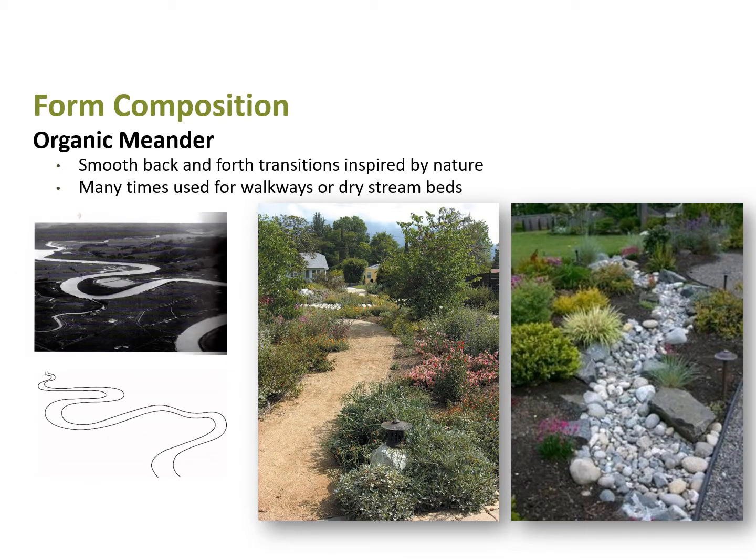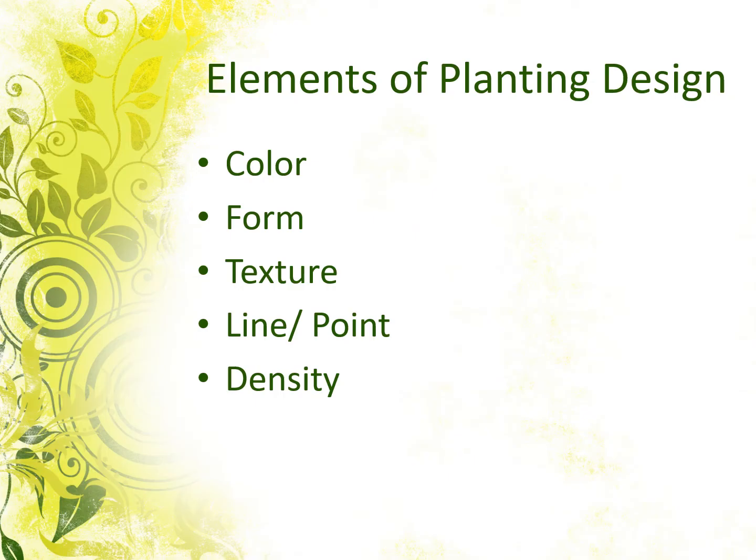The organic meander has very smooth back-and-forth transitions inspired by nature. You see this used a lot in dry creek beds or pathways, and planting can certainly take this kind of organic meander through the landscape. This tends to have a more restful feel — it's not so rigid and formal, so people tend to feel more relaxed in spaces like this.